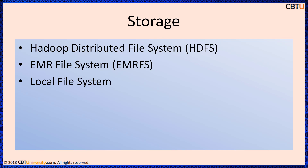Using EMR File System (EMR FS), Amazon EMR extends Hadoop to add the ability to directly access data stored in Amazon S3 as if it were a file system like HDFS. You can use either HDFS or Amazon S3 as the file system in your cluster. Most often, Amazon S3 is used to store input and output data, and intermediate processing results are stored in HDFS.